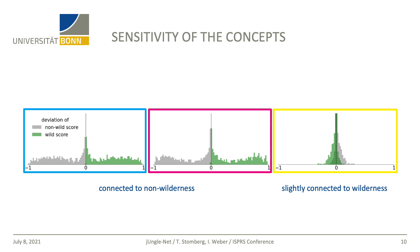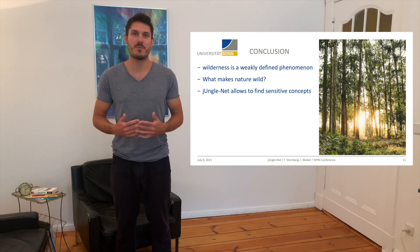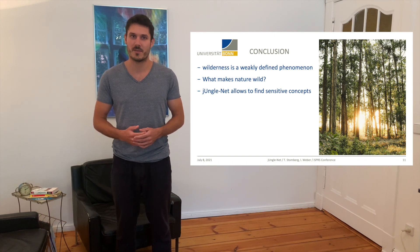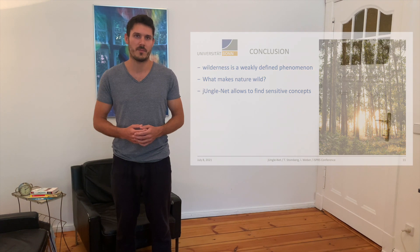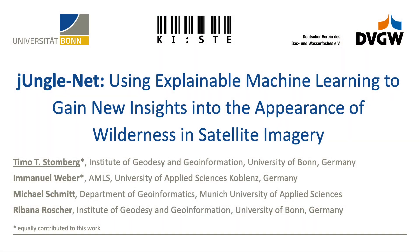To conclude this talk: wilderness is a weakly defined phenomenon, and we want to solve the question of what makes nature wild. JungleNet is an interpretable neural network that allows us to find sensitive concepts for wilderness and non-wilderness. Thank you for your attention. If you are more interested in this topic, have a look at our paper. And if you have any questions or want to exchange ideas, you are welcome to contact me anytime via this email address.